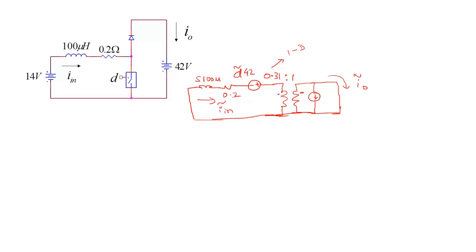Part (b) requires deriving the transfer function from d̃ to ĩ_o, i.e., ĩ_o / d̃. The controlled current source value is d̃ × ICP = d̃ × (-5) = -5d̃. Looking at the boost converter small signal model, the transformer and the controlled current source and voltage source have the same form for any boost-type converter.